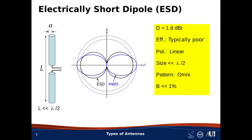The polarization of the ESD is linear, meaning the electric field vector does not rotate as it propagates. The pattern is the classic dipole omnidirectional pattern. The bandwidth of the ESD varies with radius a, but is almost always much less than 1%. This is because the imaginary part of the self-impedance is very large — as a circuit element, the ESD behaves as a small-valued series capacitor, and it's very difficult to get a broadband impedance match to that.